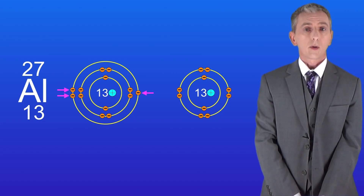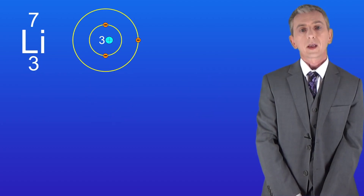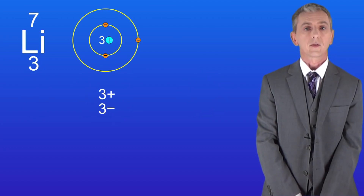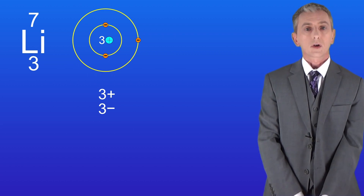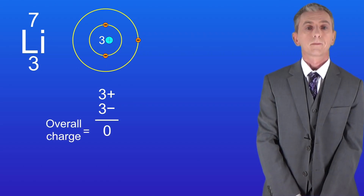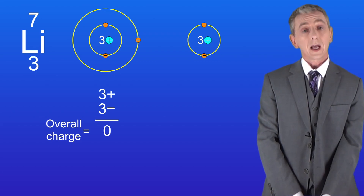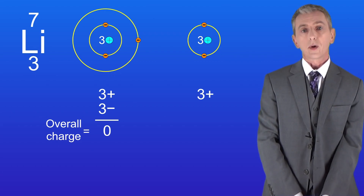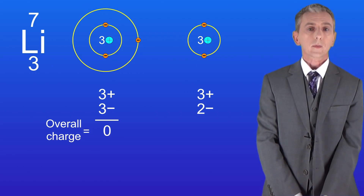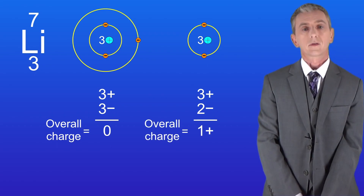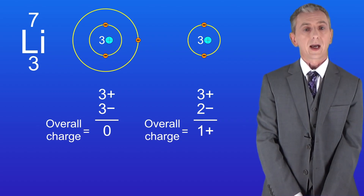Now that does create a problem, and we can see that if we look at the lithium atom again. A normal lithium atom has got three positive protons and three negative electrons. These positive and negative charges cancel, so the overall charge on the lithium atom is zero. However, when the lithium atom loses its one outer electron it still has three positive protons in the nucleus but now it only has two negative electrons. So the charges do not cancel — we're left with an overall charge of one positive. When atoms have an overall charge like this, scientists now call them an ion.